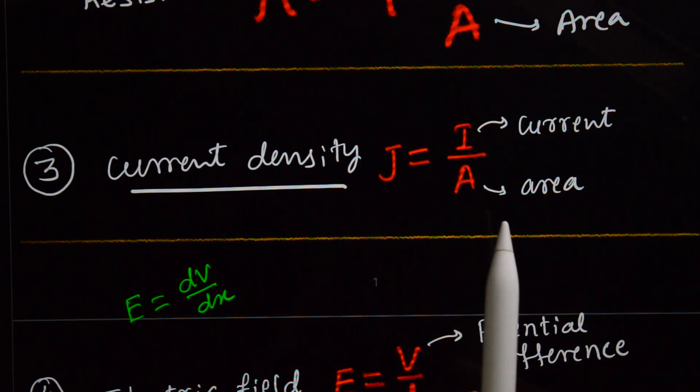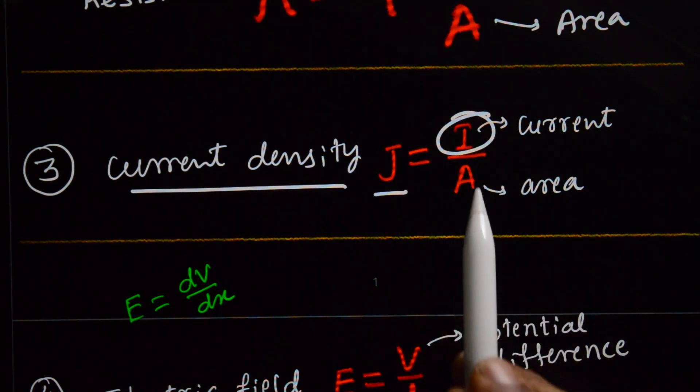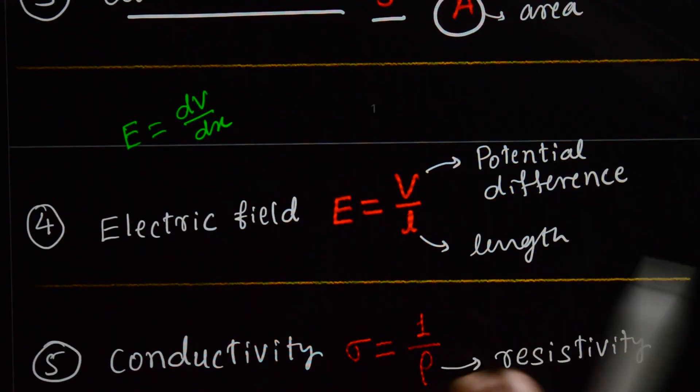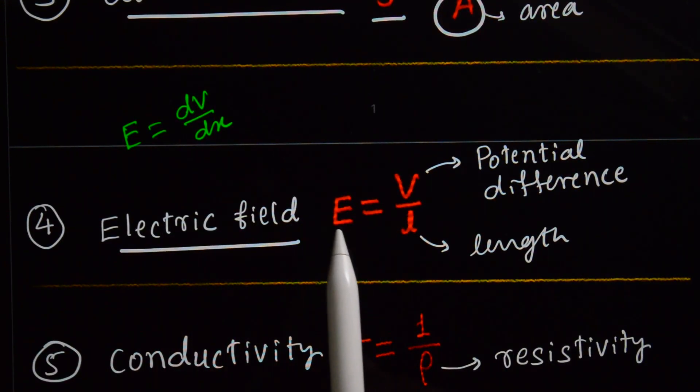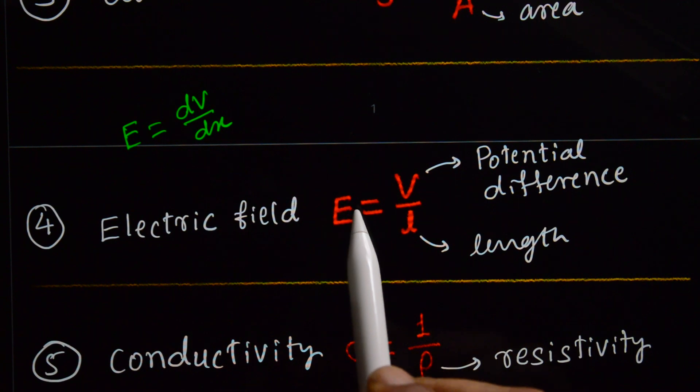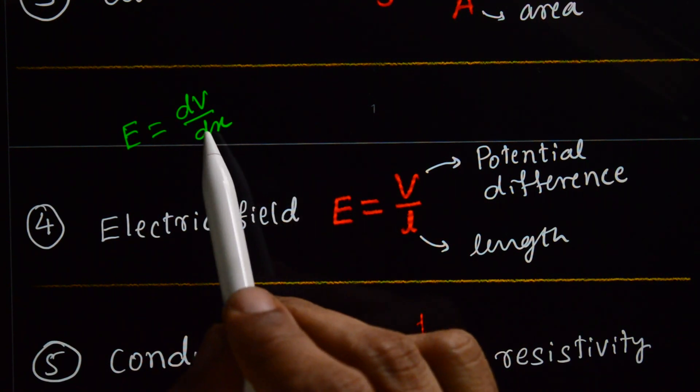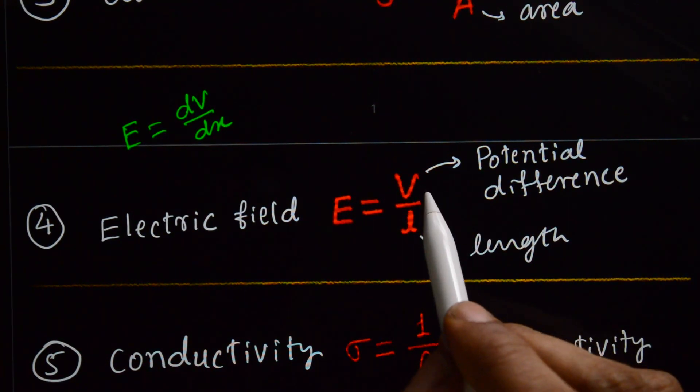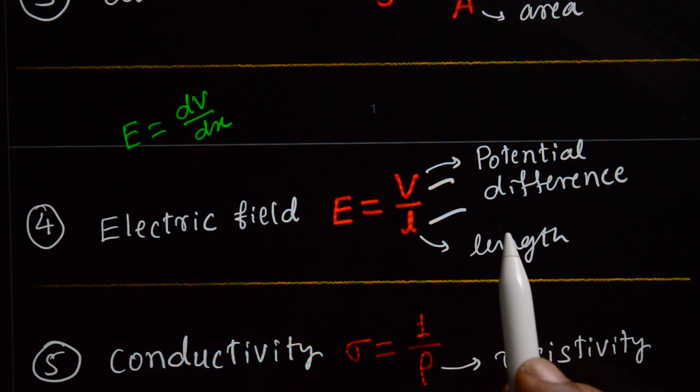And current density formula is J is equal to current I divided by area. And electric field expression would be familiar to you, that is dV by dx from your second chapter, that is V divided by L.